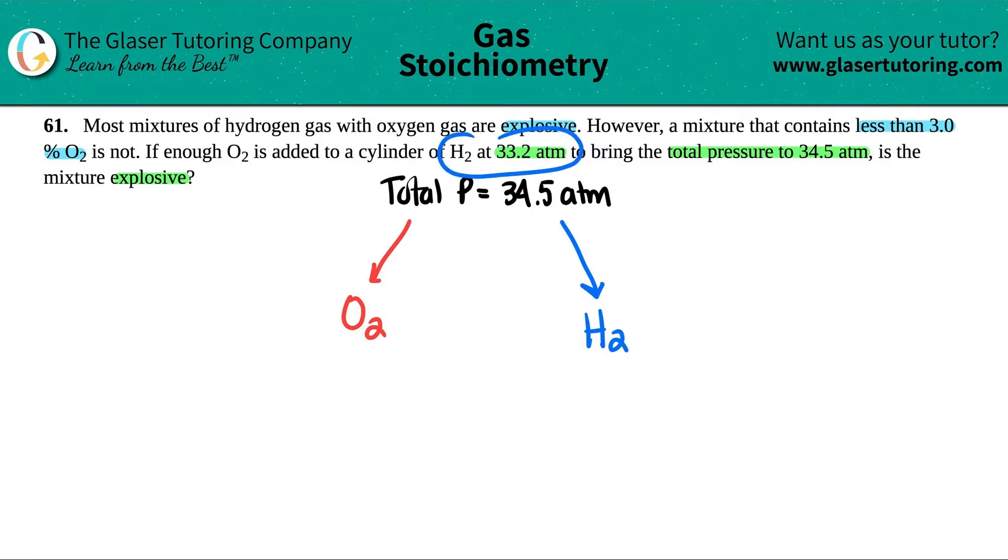So I have O2 and I have H2 in this mixture that has the total pressure of 34.5 atm. Now they told us that the H2 partial pressure. Now I say partial pressure because I'm only talking about H2, but you could just say the pressure of H2.